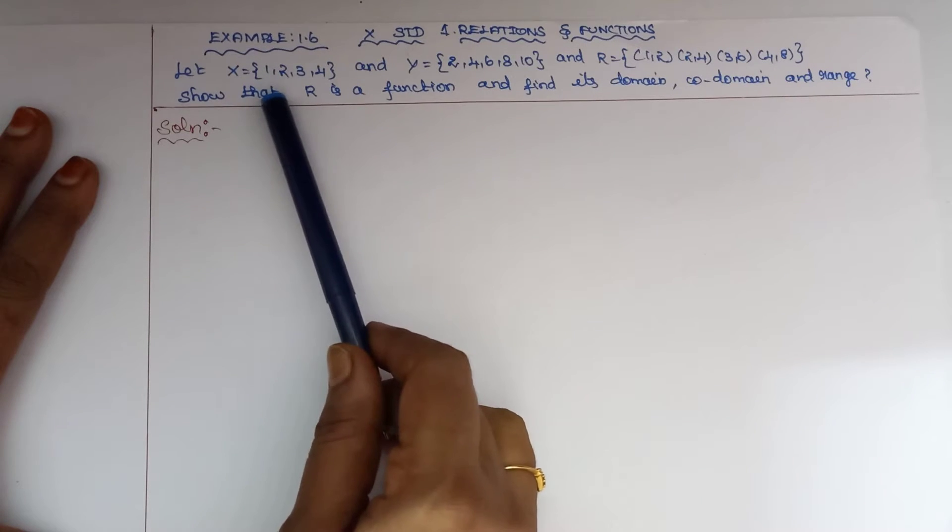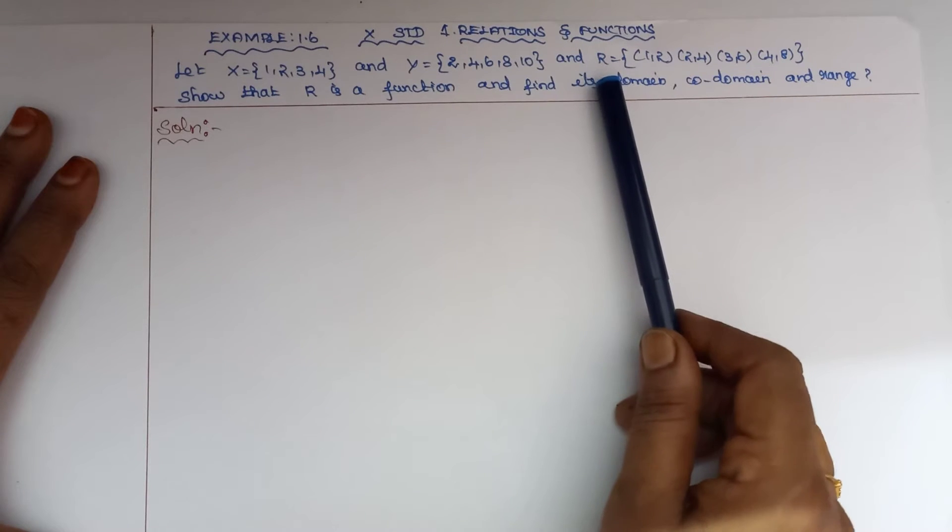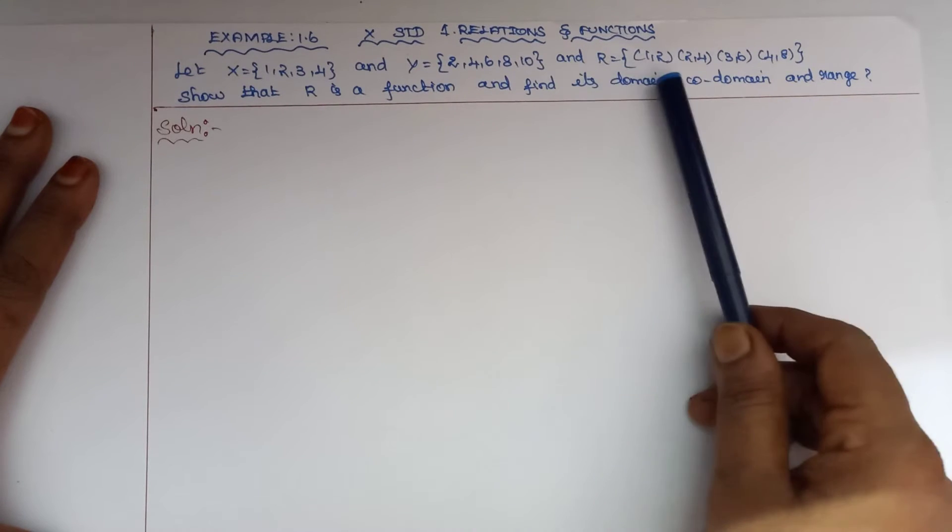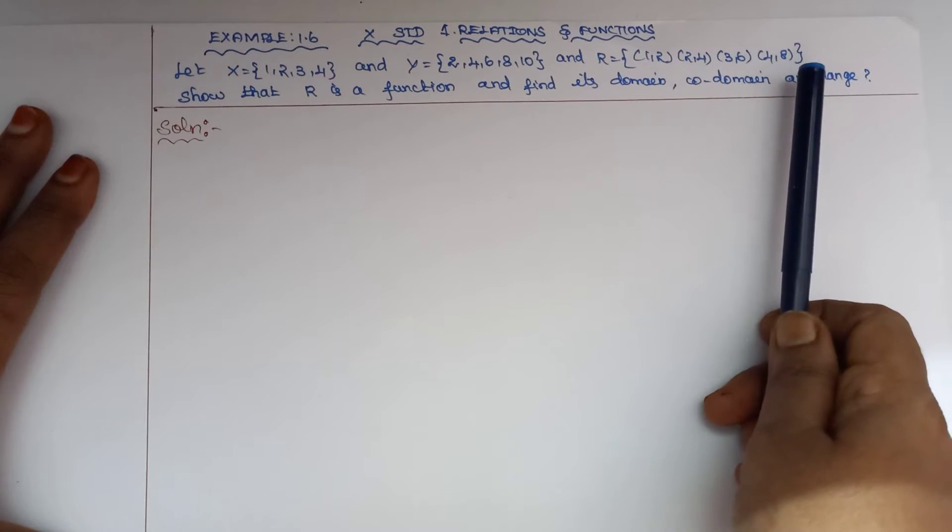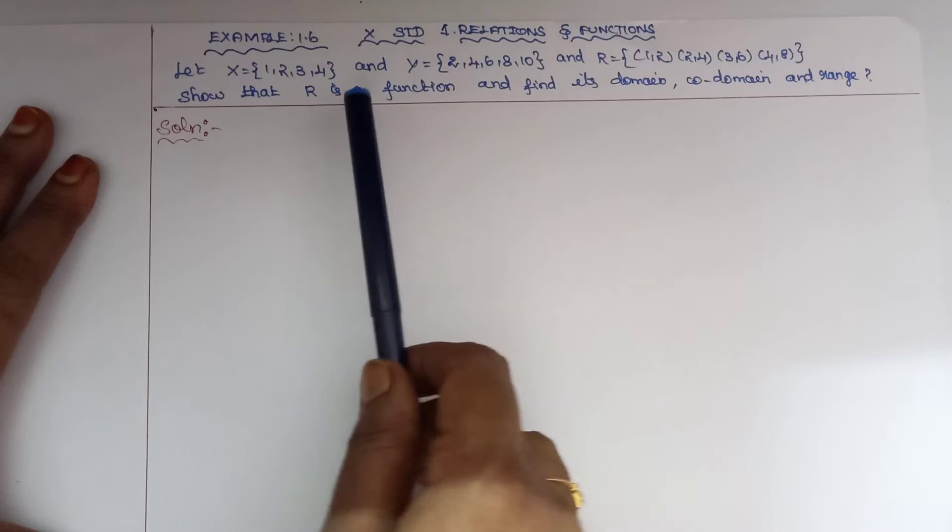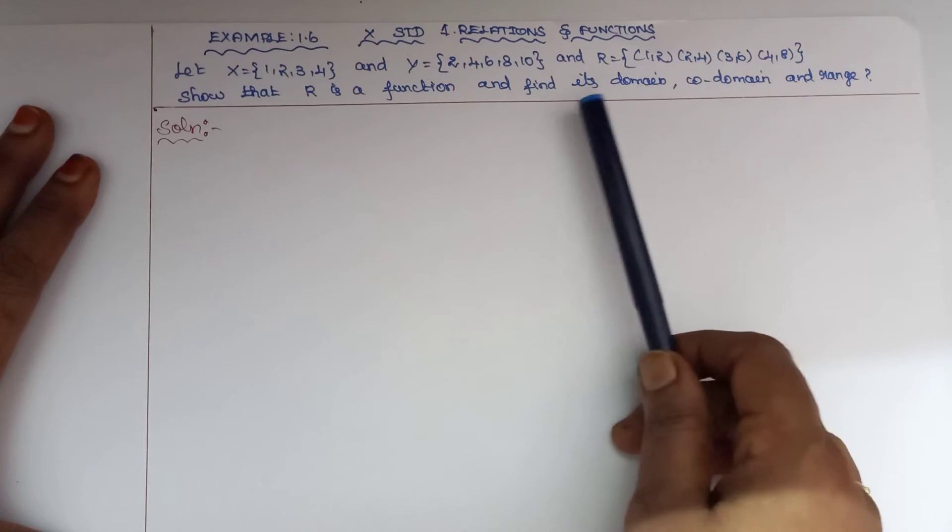We have two sets X and Y, and the relation R given as ordered pairs. We need to prove that this relation is a function and find the domain, co-domain, and range.